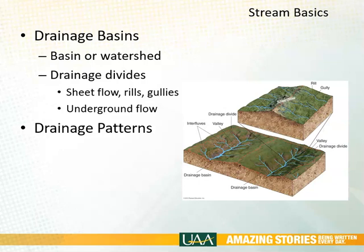A watershed is this geographic area divided from another by the height of land. Water that flows through this watershed can happen on the surface in sheets, it can go through little gullies or what are called rills, but it also moves underground as well, as the water moves its way down into the saturated zone and eventually into the river.